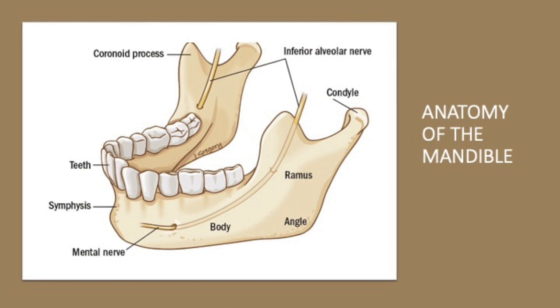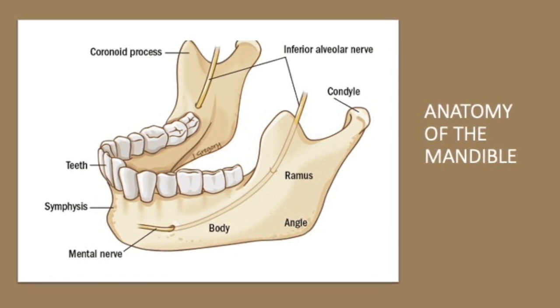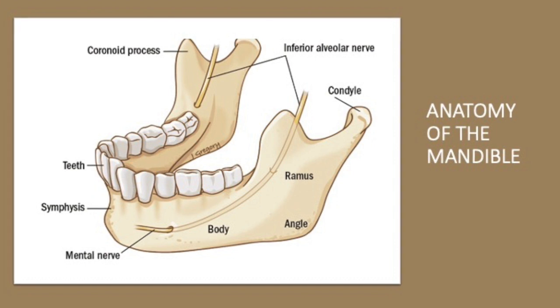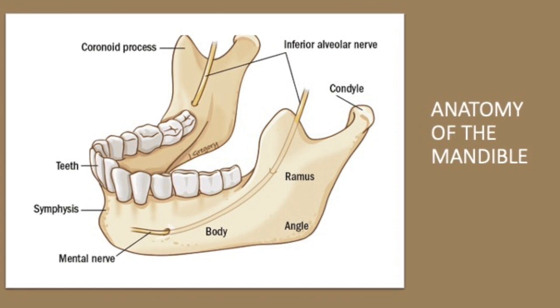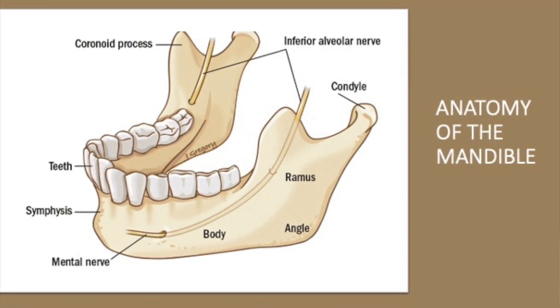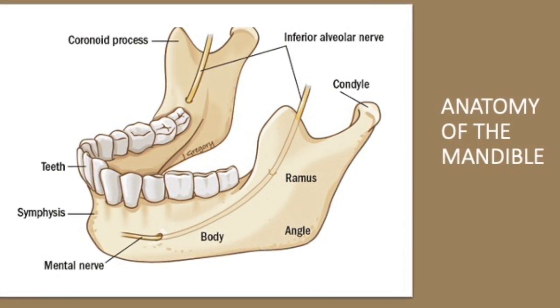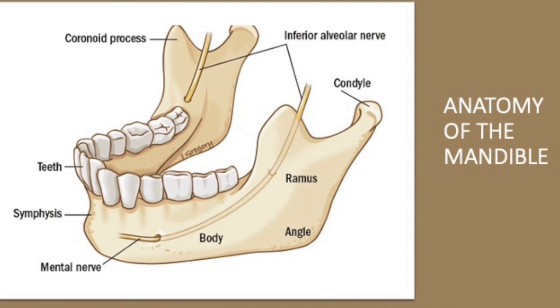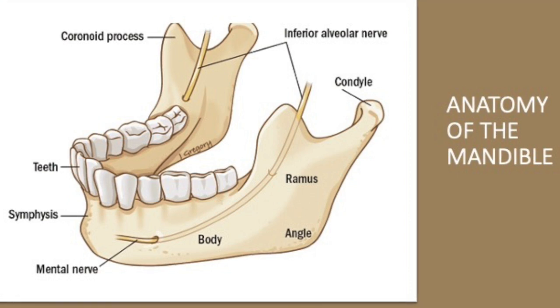Before we head on to the clinical concepts, let us look at some clinical anatomy. Here is a picture of the mandible. The mandible is divided into two parts, one on each side. Each side of the mandible has a body, an angle, ramus, a coronoid process anteriorly, and the condyle posteriorly. On the inner aspect of the ramus there is a groove through which travels the inferior alveolar nerve — the nerve dentists commonly block before any dental procedure. The nerve enters through the foramen and exits at the body through the mental foramen, where it is known as the mental nerve.